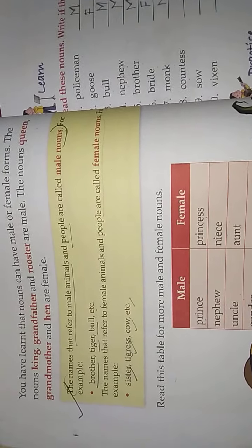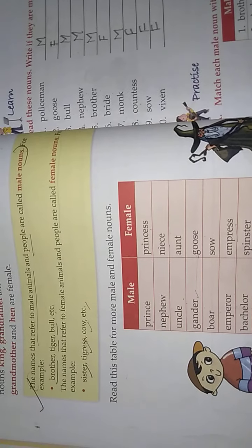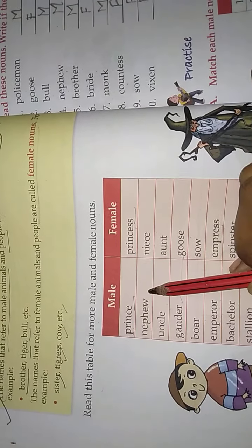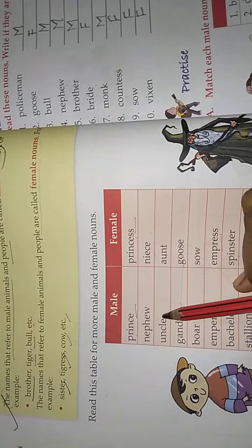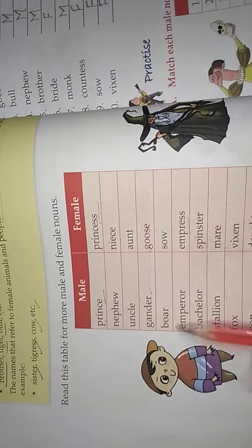Now you understand what is male and female. A male noun is the name that refers to a male animal or person, and a female noun refers to a female animal or person. Here is a table with more male and female noun pairs. For example: prince and princess, nephew and niece, uncle and auntie, and so on. Read the table by yourself.